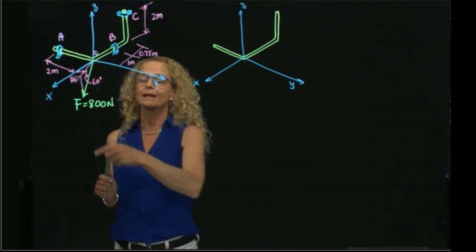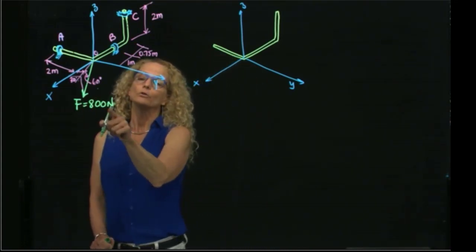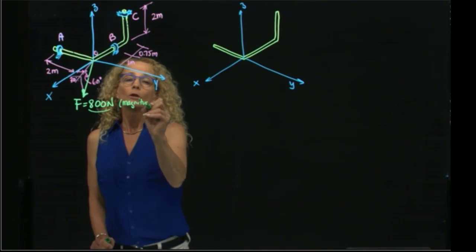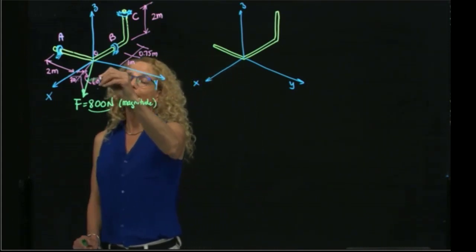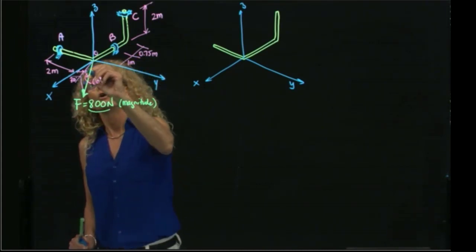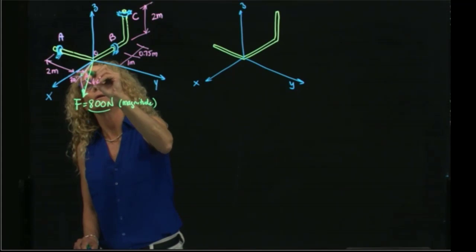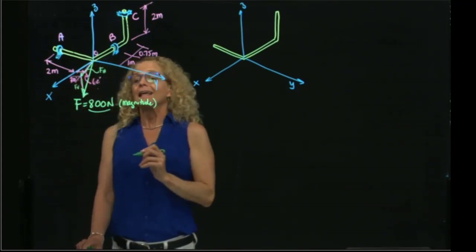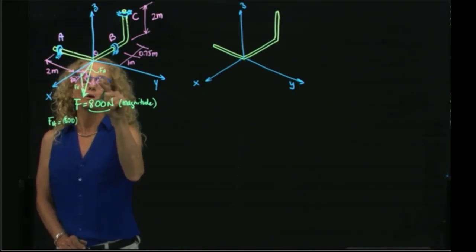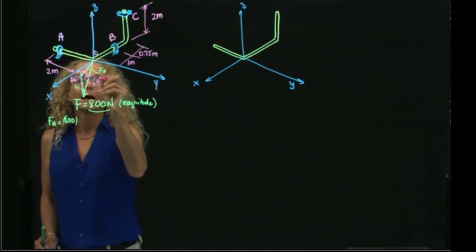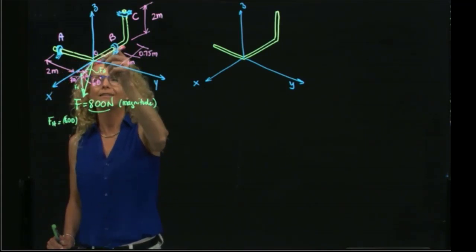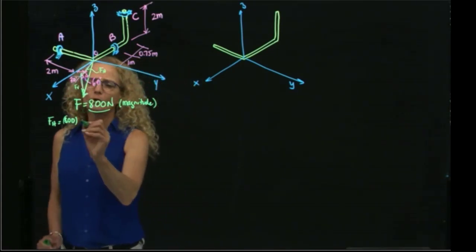Our active force in this case is F, which is 800 newtons. We are given the magnitude, and they give us the angles between the force and the plane. So we can actually write this as a horizontal component and a vertical component. The horizontal component will be 800 times cosine of 60. This angle is 60 degrees, and this is a right triangle where this is the adjacent side and the force represents the hypotenuse, so it will be cosine of 60.